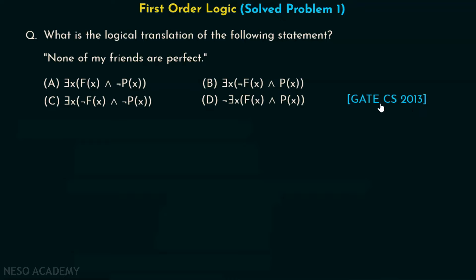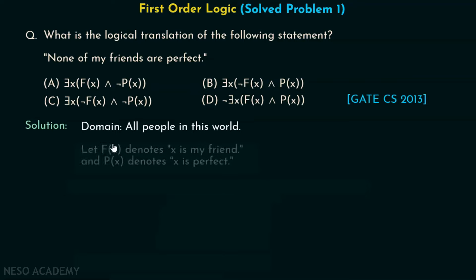Let's move on to the solution. Let us suppose that the domain consists of all people in this world. Let us suppose F(x) denotes 'x is my friend' and P(x) denotes 'x is perfect'.